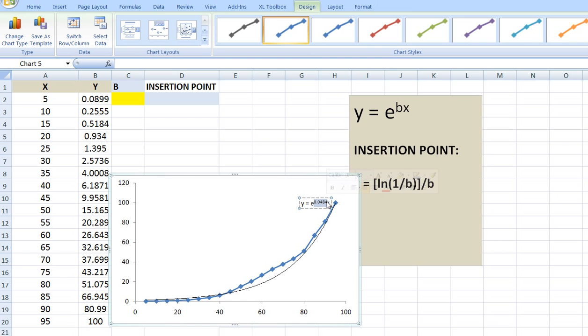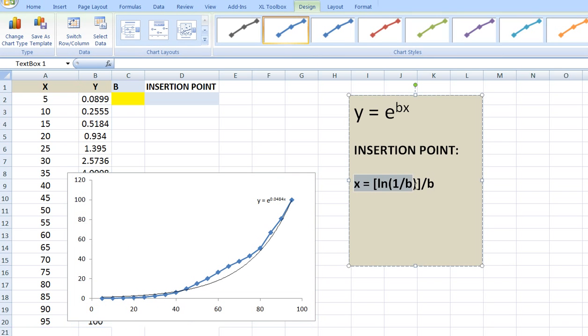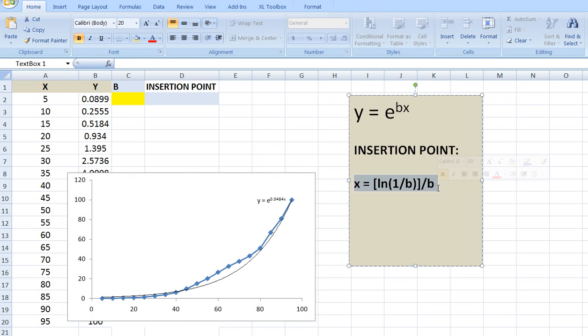Now we can use this regression coefficient to solve this formula, which will give us the insertion point - the point on the x-axis where the curve changes from negative to positive.